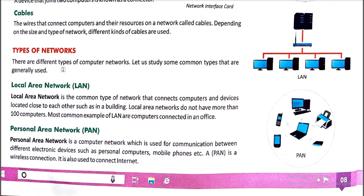There are different types of computer networks. Let us study some common types that are generally used. The first is LAN — Local Area Network. LAN is the common type of network that connects computers and devices located close to each other, such as in a building — a school building, company building, or hospital. We use LAN for that area.